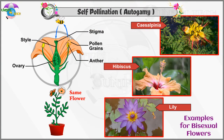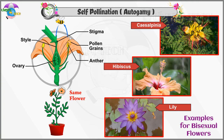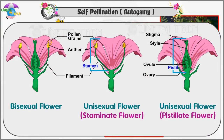Self-Pollination or Autogamy: According to a majority of botanists, the transfer of pollen on the stigma of the same flower is called Self-Pollination or Autogamy. Self-Pollination is possible only in those plants which bear bisexual flowers.